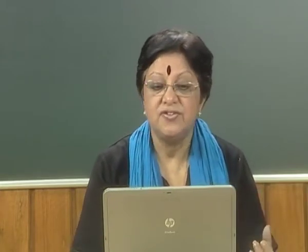When we come to John Dryden, who towers over this age — not as Milton towers over his age, or as Shakespeare had towered over his age — that is why we have termed the ages the age of Shakespeare or the age of Milton, and not the age of Dryden or the Augustan period, because we have many scholars and writers who are equally important to discuss. Dryden is the greatest literary figure of the restoration. A quote from William J. Long says that if we can think of literature as a canal of water — Dryden is the lock by which the waters of English poetry were let down from the mountains of Shakespeare and Milton to the plain of Pope.